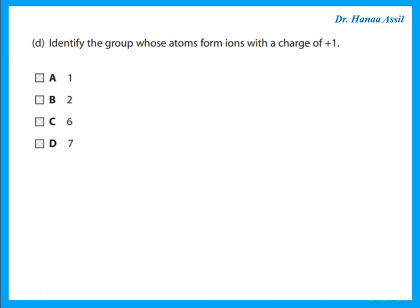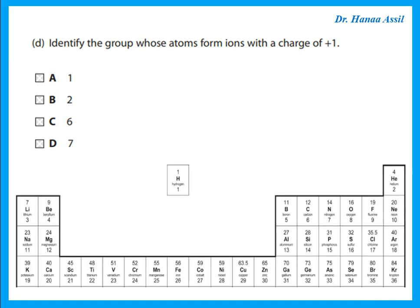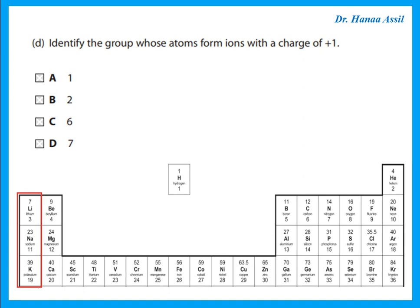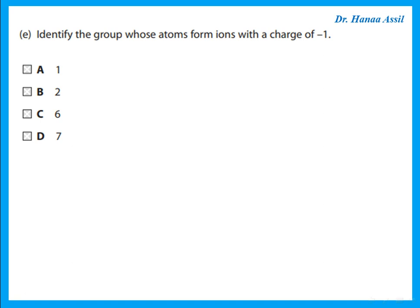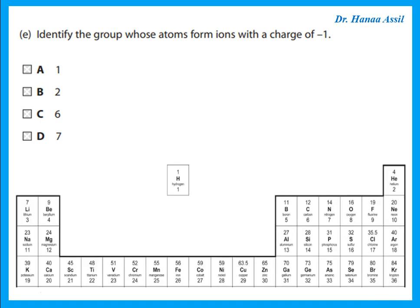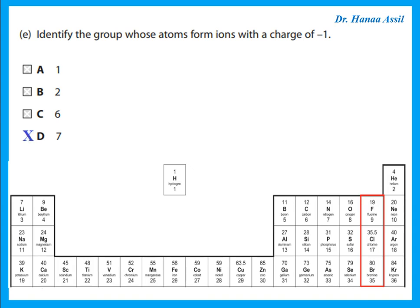Identify the group whose atoms form ions with a charge of plus 1. To form an ion with a charge of plus 1, we're looking for something that has one electron in its outer shell, so that when it forms ions it will lose that electron — we're looking for something in group 1. Then, identify the group whose atoms form ions with a charge of minus 1. Minus 1 means we're in group 7; group 7 has 7 electrons in their outer shell, so when they form ions they gain 1 electron and the ion has a charge of minus 1.